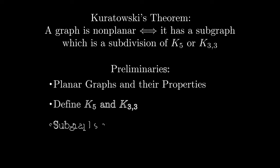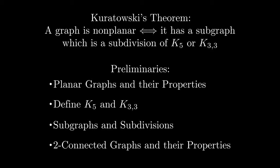Before we can jump into the main proof, there are some preliminaries we have to go over. First we'll talk about planar graphs and their properties, then we'll define what K5 and K3,3 are, next subgraphs and subdivisions, and then two-connected graphs and their properties.